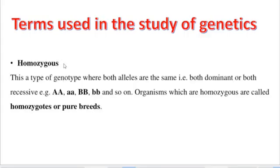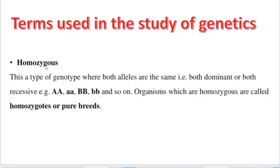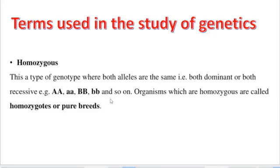Homo means same. Homozygous refers to the type of genotype where both alleles are the same — for example, both dominant (capital AA or capital BB) or both recessive (small aa or small bb). Organisms which are homozygous are called pure breeds because they have a pure genotype.